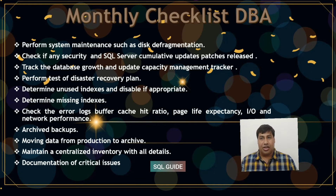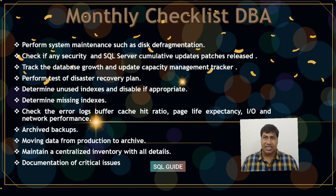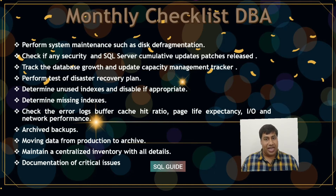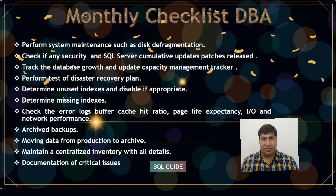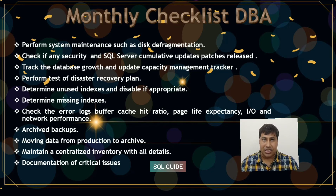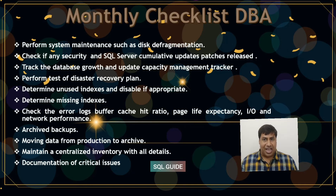For the monthly checklist: perform system maintenance such as disk defragmentation. Check if any security and SQL Server cumulative update patches have been collected and released. Track database growth and update the capacity management tracker. Perform a test of the disaster recovery plan. Determine unused indexes and take required action. Determine missing indexes.